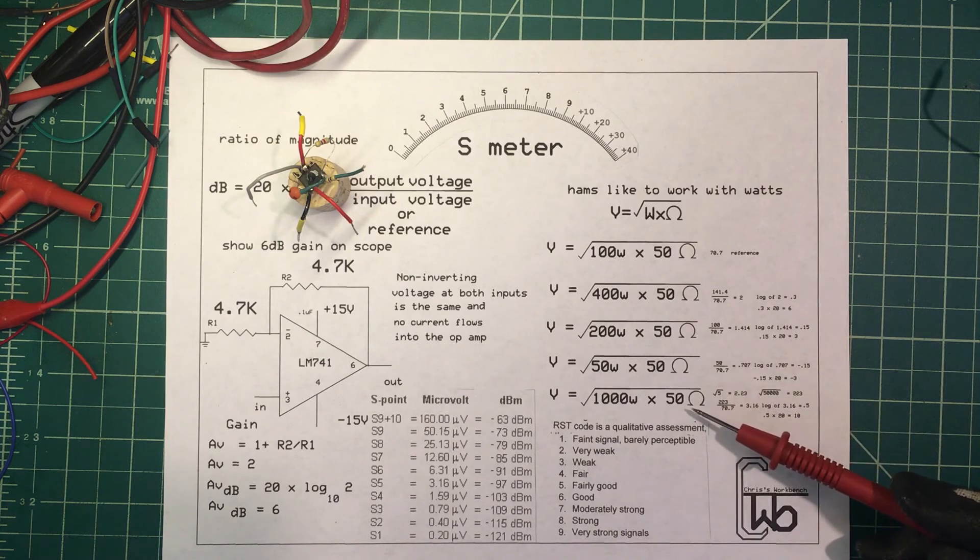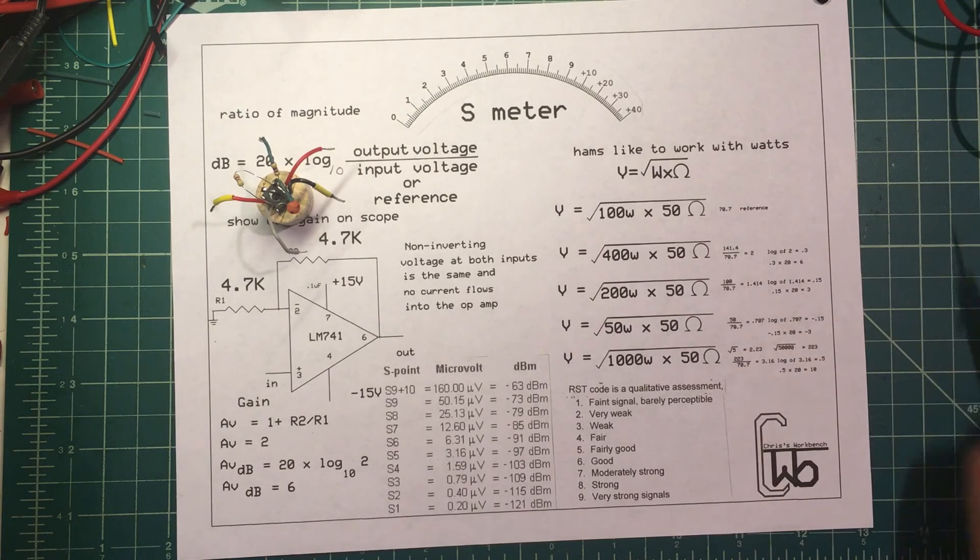We like to give a signal report: readability, signal strength, and tone. Now the tone we use on CW, but usually we do readability and signal strength. We'll tell somebody that they're a, you know, a five nine. So readability is scaled from one to five, and of course signal strength is scaled from one to nine.